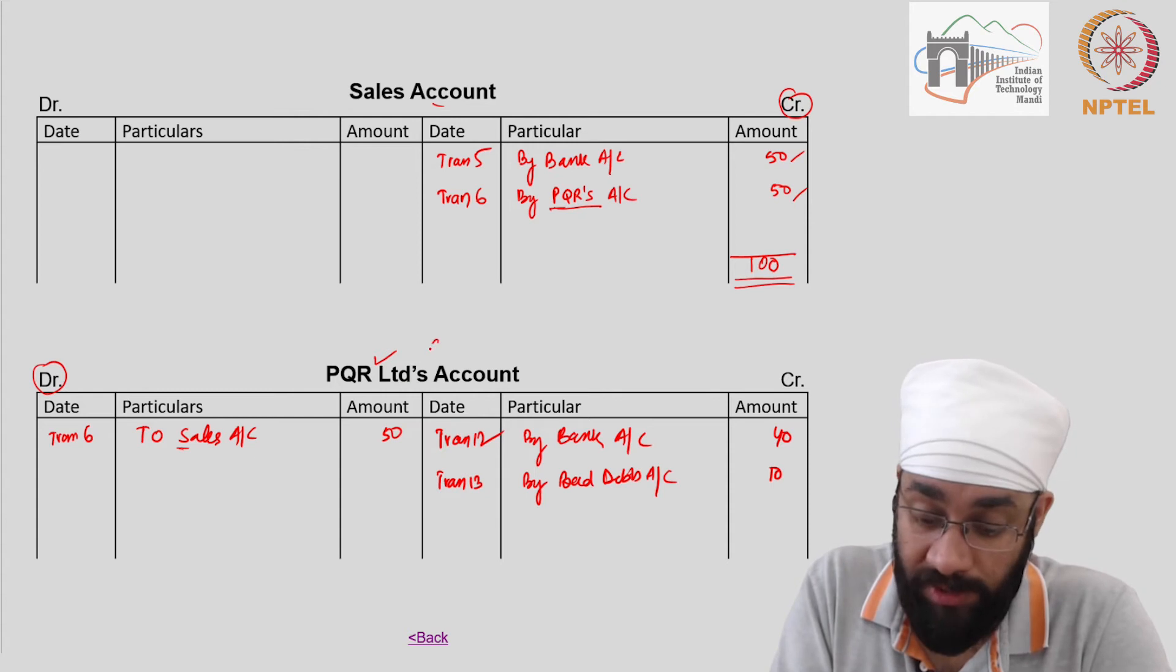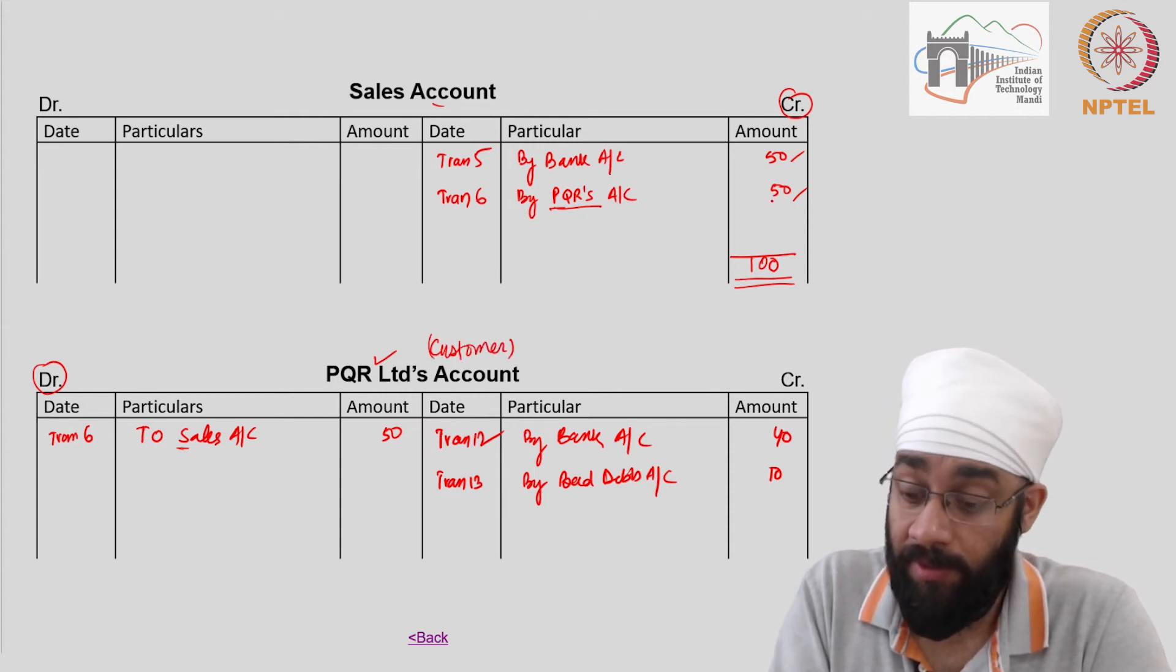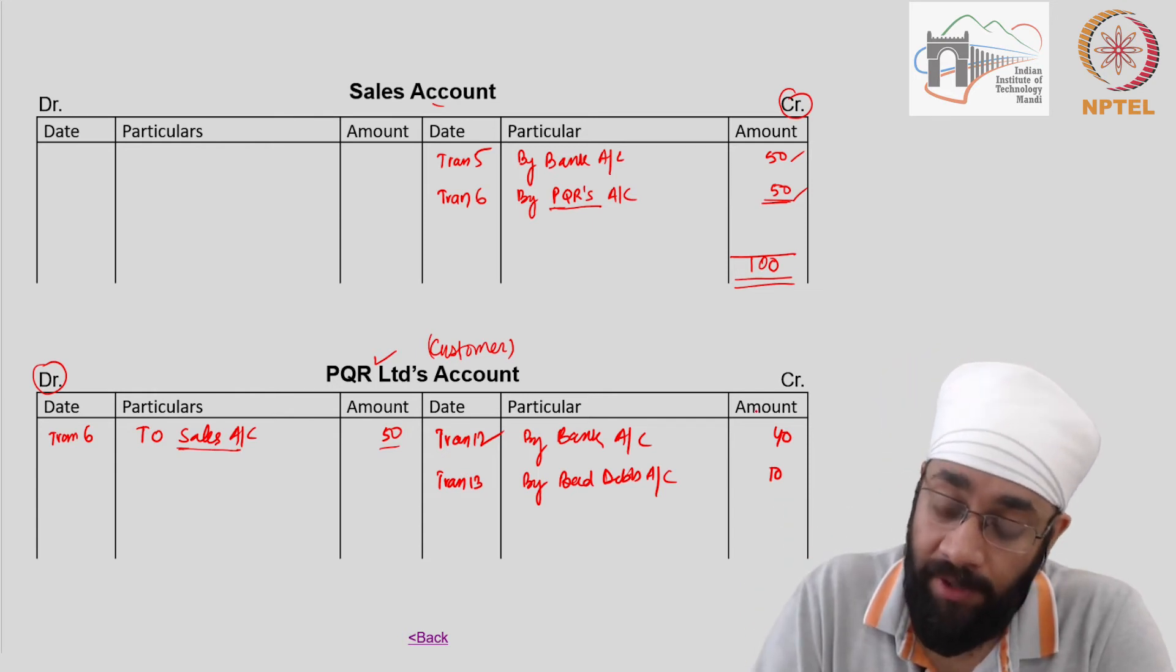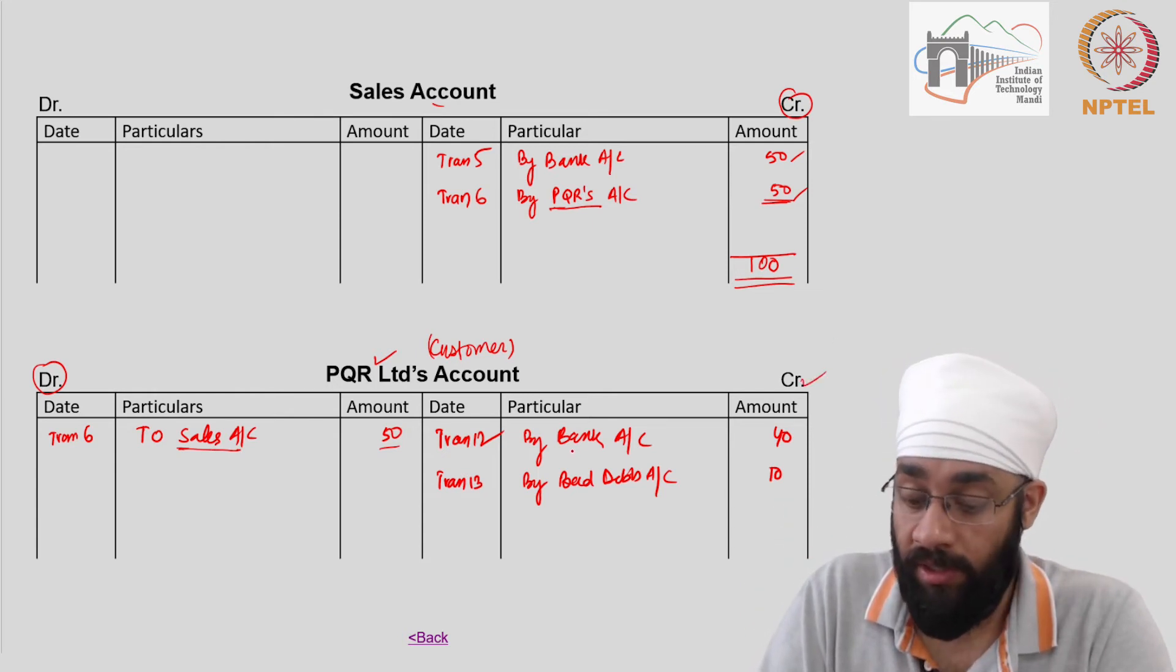For PQR, who is the customer who has received the goods from us and not paid back, on the debit side you've written we have sold to him goods worth 50, and on the credit side of PQR's account you're saying he has paid to us 40 but 10 are bad debts.